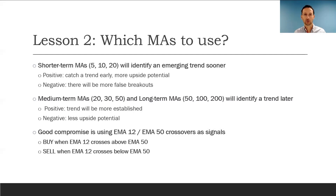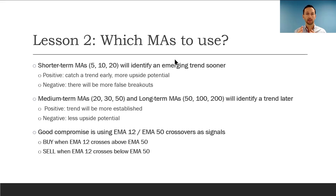A technique traders use to identify buy or sell signals using moving averages is crossovers — meaning when the shorter-term moving average crosses above the slower or longer-term moving average, that tends to be a buy signal, a bullish signal indicating there is some increasing momentum and increasing slope of the trend line that we should be paying attention to, and that could lead to some further gains.